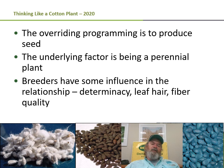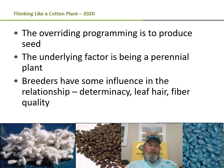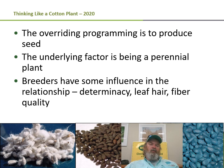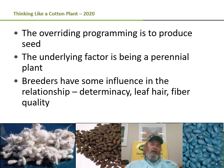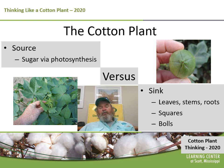As background for when we get into the fruiting cycle, the overriding programming of a cotton plant — and most plants — is to produce seed. The plant defaults back into that survival mechanism because its programming is that its genes need to move forward in nature. An underlying factor is that it's a perennial plant we grow as an annual. Breeders do have some influence: we can alter determinacy, creating early and late varieties; we can change the amount of leaf hair present; and fiber quality, which has greatly changed in the last 20 to 30 years, remains a continuous focus.